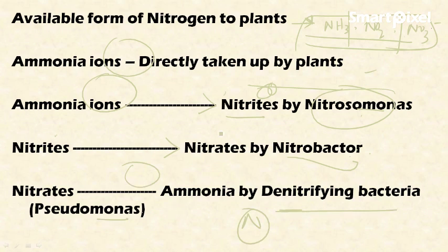After conversion into nitrates, these nitrates are again converted into elemental nitrogen by denitrifying bacteria called Pseudomonas, thereby completing the nitrogen cycle. Atmospheric nitrogen is fixed into ammonium ions, which are converted into nitrites, then nitrates, and finally denitrified and released back into the atmosphere by Pseudomonas bacteria.